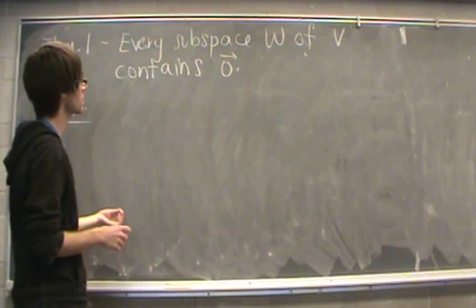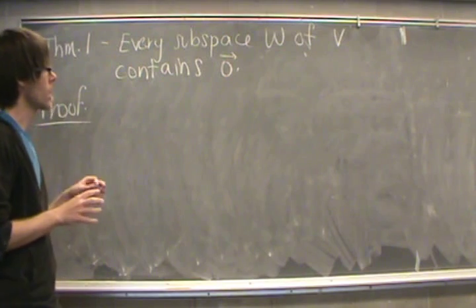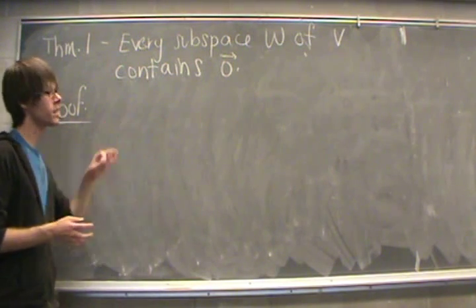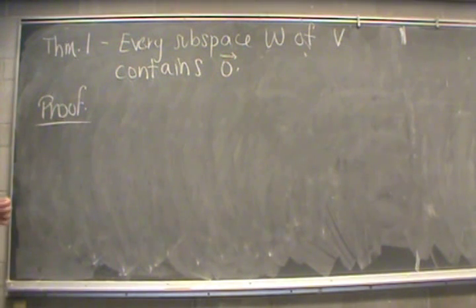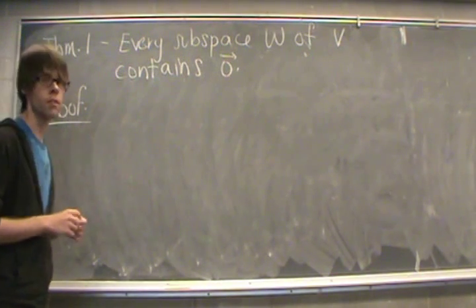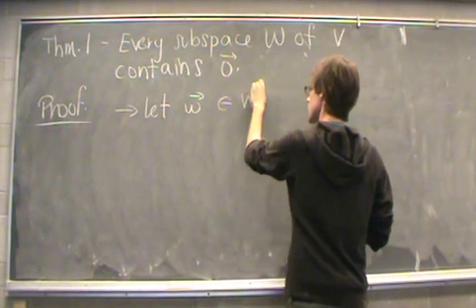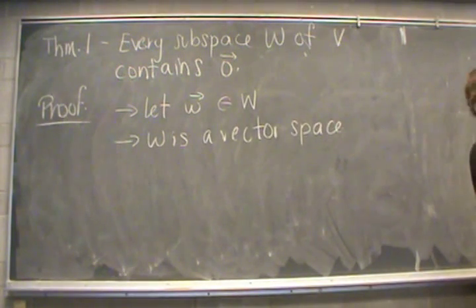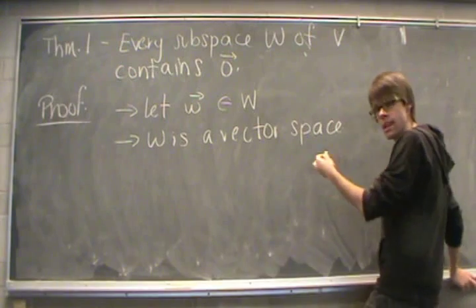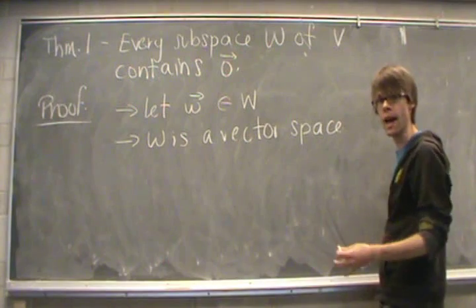Next, I want to prove a really nice property of subspaces: every subspace you encounter is going to contain at least the zero vector. To prove this, we take an element from our subspace W — call it small w. So let w be a vector inside of our subspace. Remember that the definition of subspace means it's a vector space under the same addition and scalar multiplication as V.